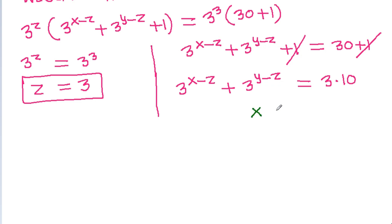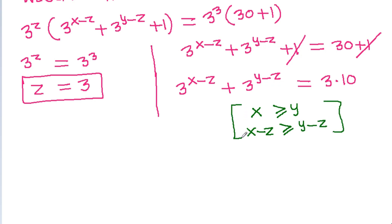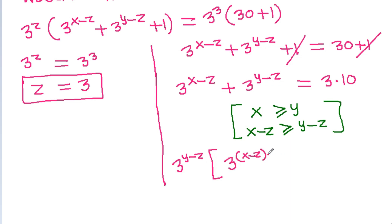So 3 power (x minus g) plus 3 power (y minus g) is equal to 30, which is 3 times 10. Since x is greater than or equal to y, x minus g is greater than or equal to y minus g. We can take 3 power (y minus g) common, giving 3 power (x minus g minus (y minus g)) plus 1 is equal to 3 times 10.